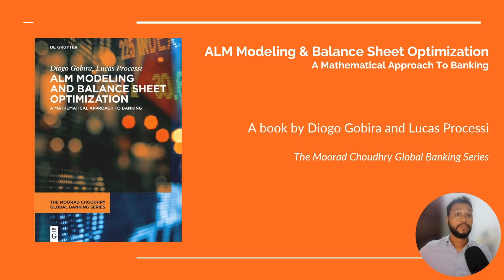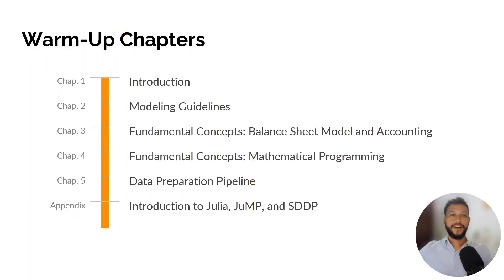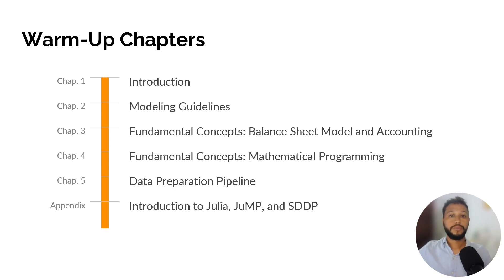In the next slides, I'm going to walk you through the content of this new book we have just released. We begin with a warm-up in the first chapters, introducing the ALM problem as a constrained mathematical optimization challenge and providing motivations for a holistic approach. We then present modeling guidelines based on our experience, a review of accounting concepts, an overview of mathematical programming, and specifically Stochastic Dual Dynamic Programming, or SDDP, which is the main tool we use throughout the book. We also explore organizing data pipelines for financial data and assumptions, and the appendix includes an introduction to the Julia programming language and all tools needed to understand the code examples.